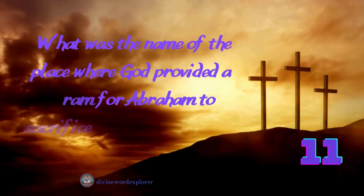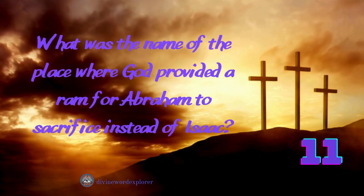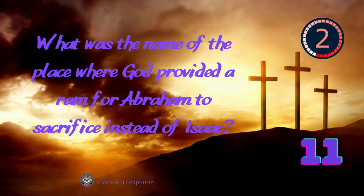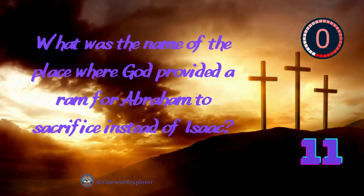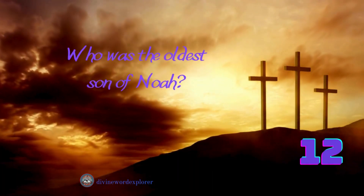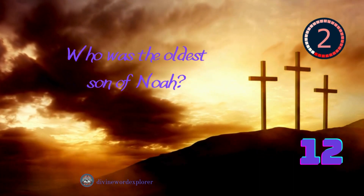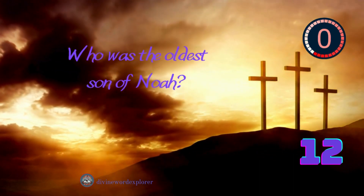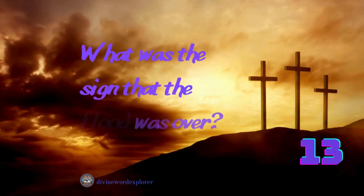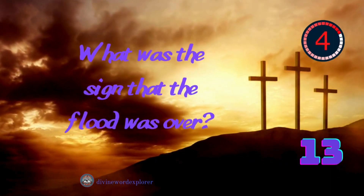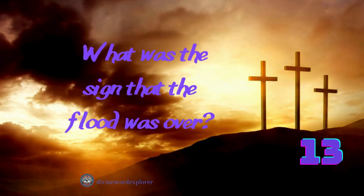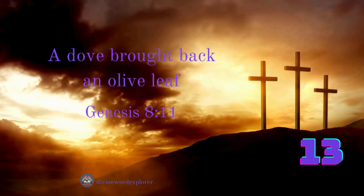What was the name of the place where God provided a ram for Abraham to sacrifice instead of Isaac? Answer: Mount Moriah. Who was the oldest son of Noah? Answer: Japheth. What was the sign that the flood was over? Answer: A dove brought back an olive leaf.